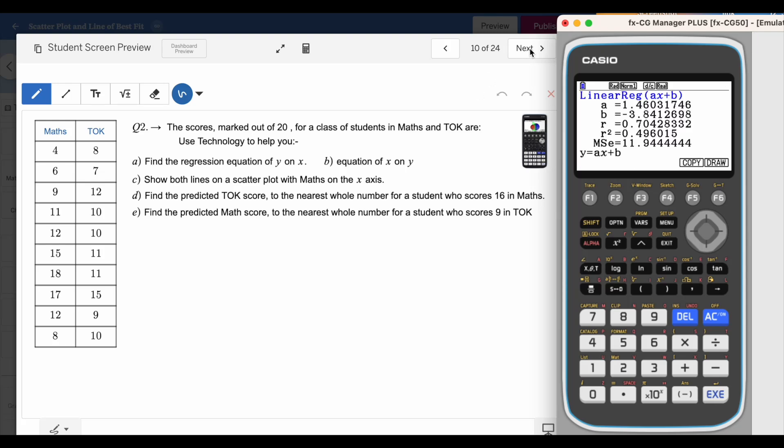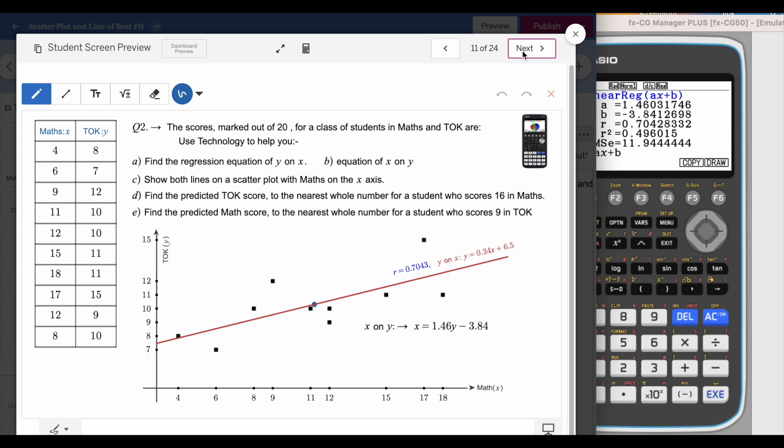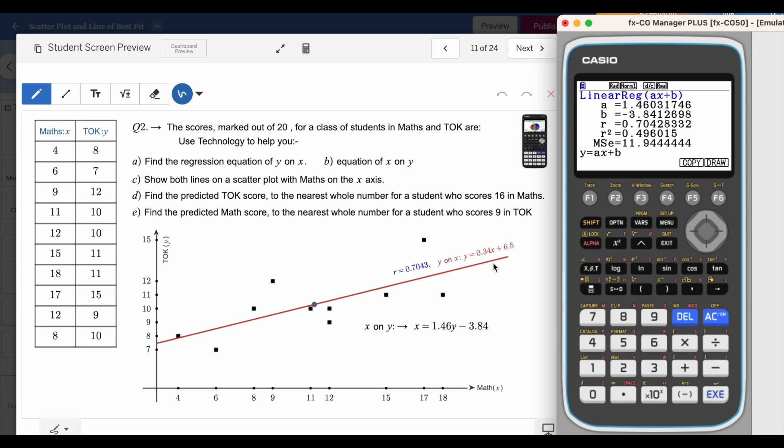You can see here. Let me show you the answers for this question. This was in IB exam and you can see here. First answer is the previous one 0.34x plus 6.5 and this one is 1.46y minus 3.84. Look at that negative 3.84. I know calculator will give you y equals ax plus b but in your final answer you have to write as x equals 1.46y minus that value. The regression is not going to change the coefficient r. R value is same 0.704. Same here. It doesn't matter which direction you do but it will help you to answer e now.